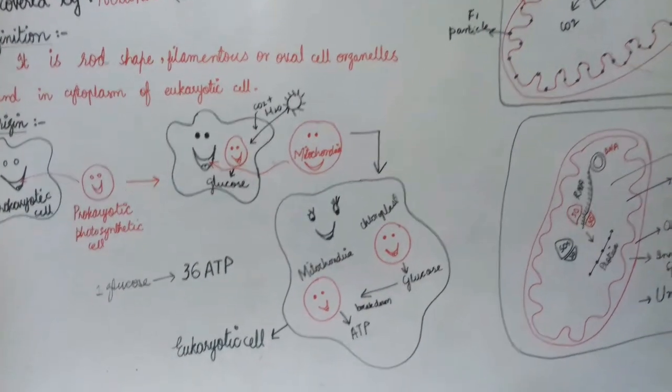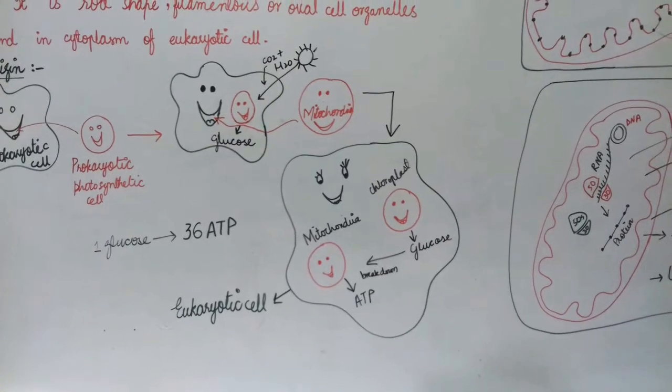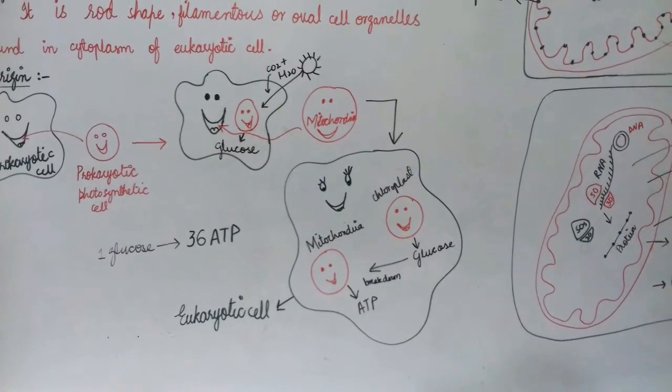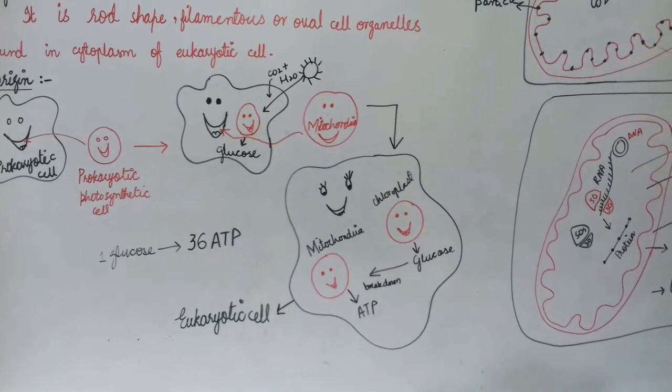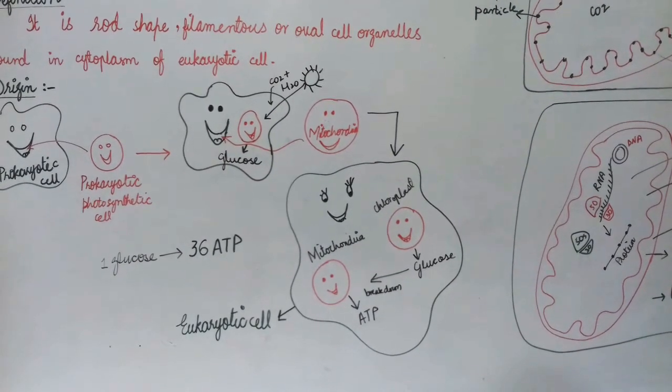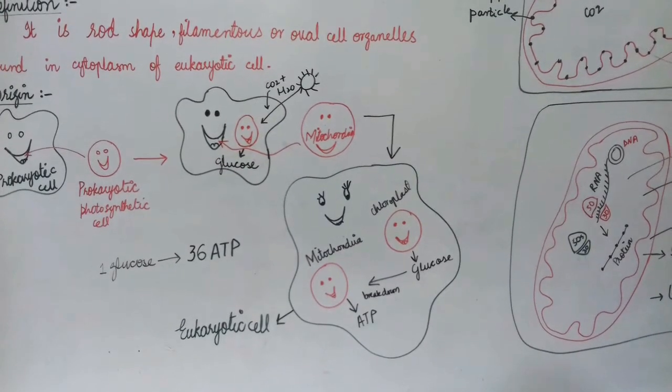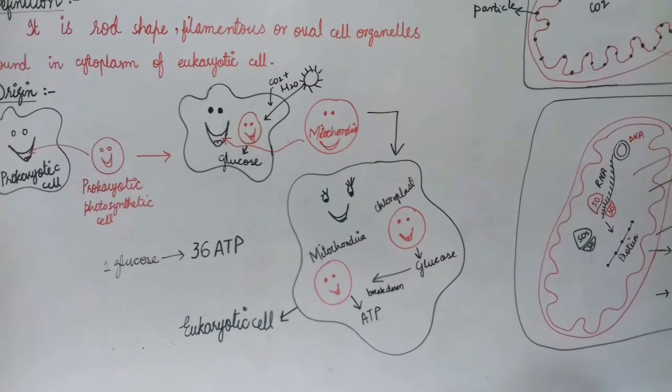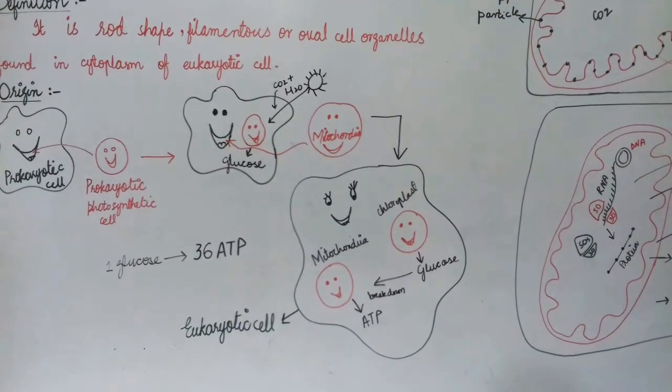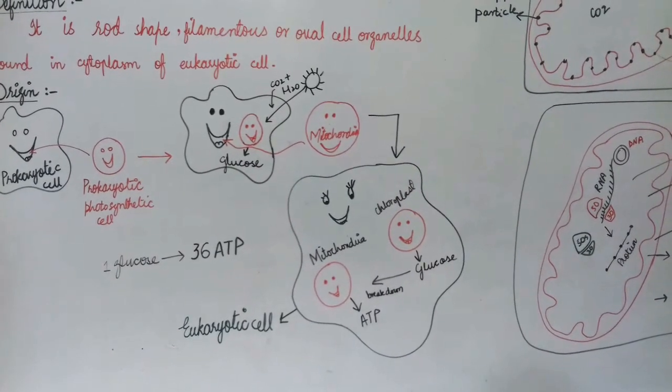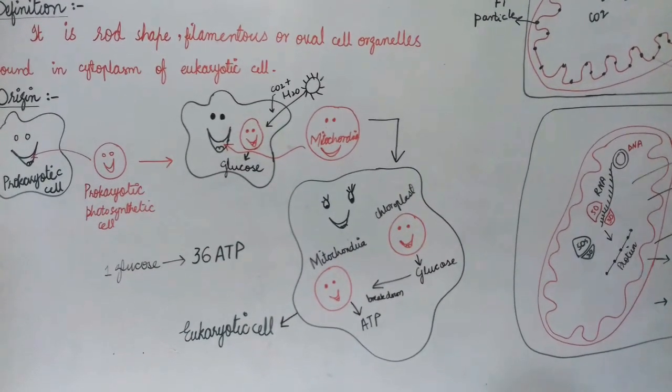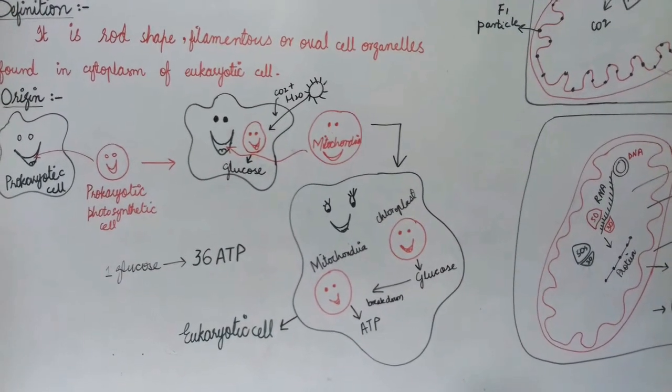In this diagram, basically a chloroplast and a mitochondria. What does chloroplast do? It produces glucose in the presence of sunlight, water, and carbon dioxide. While mitochondria takes that glucose and breaks it down to produce ATP. Chloroplast prepares food, mitochondria produces energy—a symbiotic relationship. One prepared food and the other produced energy.